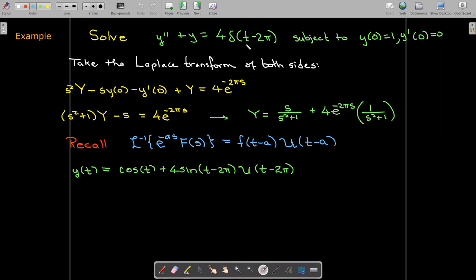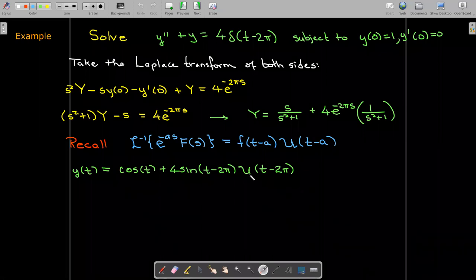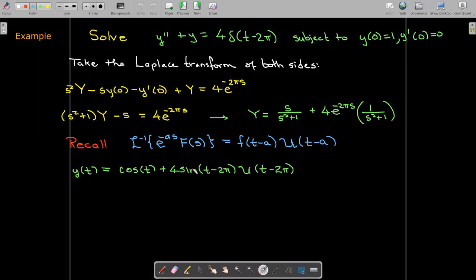And so that means that our response function in this system, you could think of this as a spring-mass system which has a driving force. You could think of it as a spring-mass system where at t equals 2π you hit that system with a force of four units. So you're essentially whacking that mass. And then what's going to happen? Well, then it's going to have this second term. The second periodic term or harmonic term gets added in.